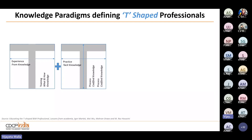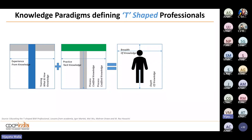For a T-shaped professional: the vertical part of the T — the I portion — represents deep expertise in a particular tool or topic; the horizontal part represents the practice component, where that knowledge is implemented across various projects, broadening the professional's horizon and gaining codified process knowledge. Combining both vertical and horizontal integration gives breadth and depth of knowledge through experience and training.